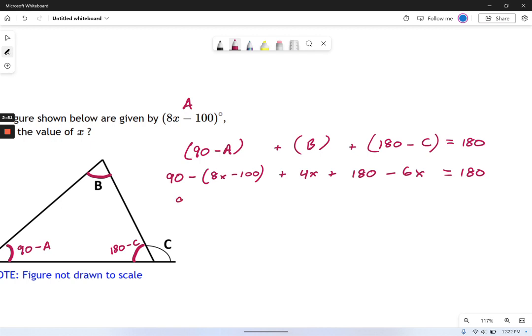So first I'm going to distribute some stuff. Minus that parentheses becomes 90 minus 8x plus 100. Then I've got my plus 4x right here. Then I've got my plus 180 degrees minus 6x equals 180.